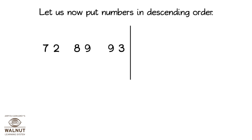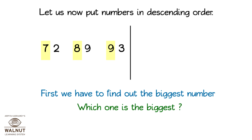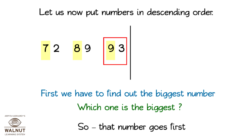Let us now put numbers in descending order. First, we have to find out the biggest number. Which one is the biggest? 93. So, that number goes first.